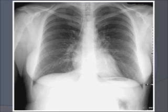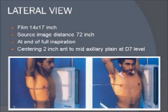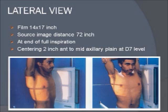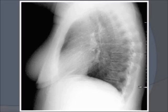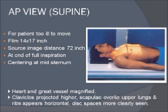For the lateral view, the patient faces laterally and the cassette is placed on the lateral aspect of the patient. Again, the cassette is 14x17 inches and the source-to-image distance is 72 inches or about 6 feet. We ask the patient to take a full inspiration, and centering is done at the D7 level. This is an example of a lateral view — both lungs are overlapped, but there are specific indications for this view.